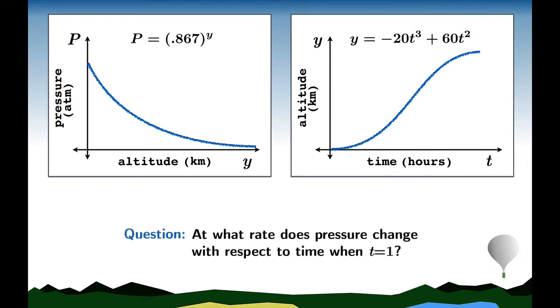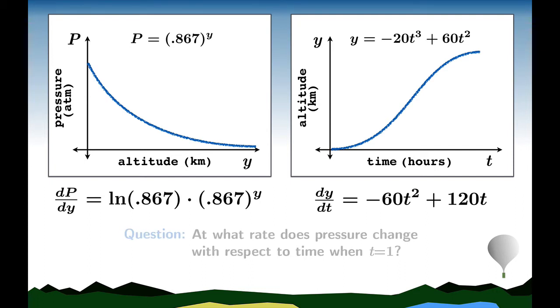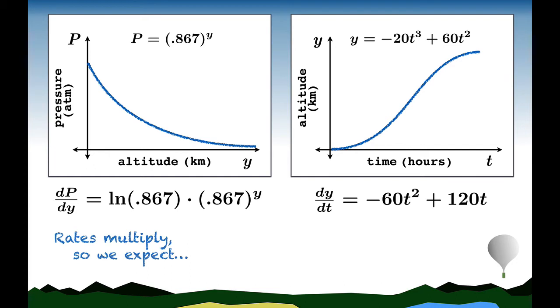The chain rule is the way for generally taking derivatives of composite functions. So, let's make our question even more focused. Let's ask, at what rate does pressure change with respect to time when t equals 1? So we have in mind a very particular moment. We want to find the rate at which pressure changes with respect to t. Even though we can't take the derivative of the composite directly, we do know how to take the derivative of each function individually. The left-hand function is a pure exponential function, and the right-hand function is a polynomial. So finding these derivatives is no problem. Now we have this notion that rates should be multiplied together. So if we want dp/dt, we might expect this quantity to be the product of dp/dy and dy/dt.